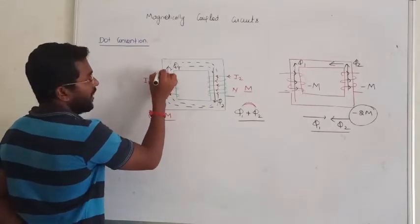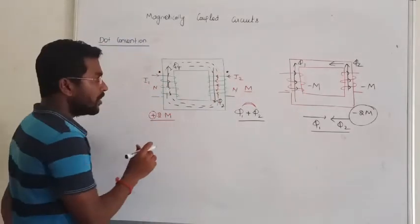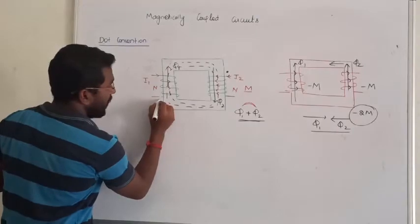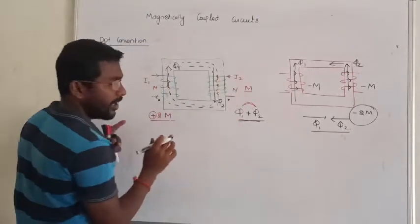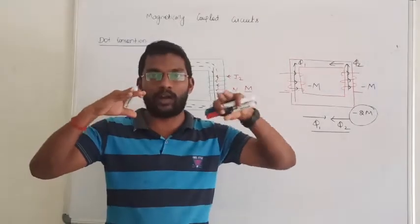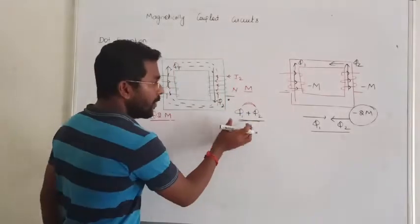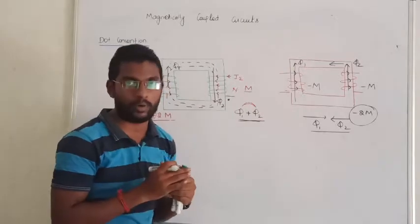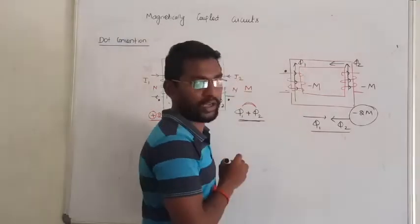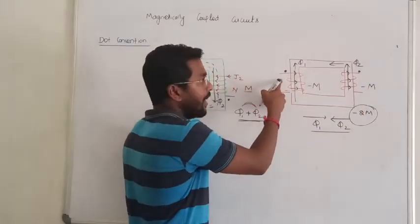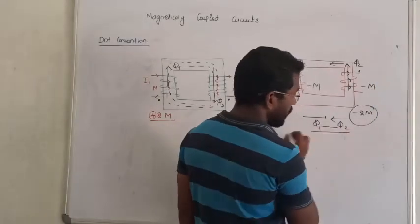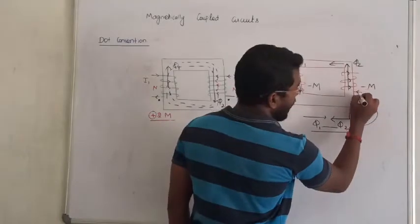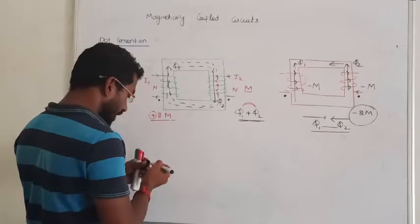The current entering point is where the dot is placed. On both sides, if the current is entering at the dot terminal, they are aiding — that gives addition. In the opposite case, if current is leaving at the dot on one side and entering at the dot on the other side, they are opposing each other. That is the conclusion of dot convention.